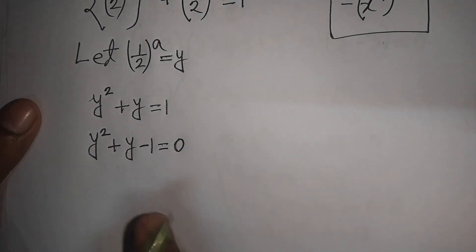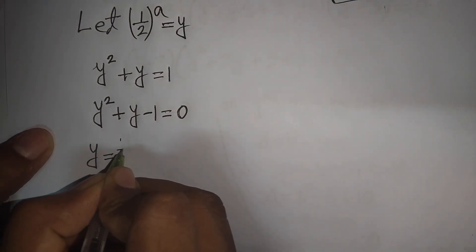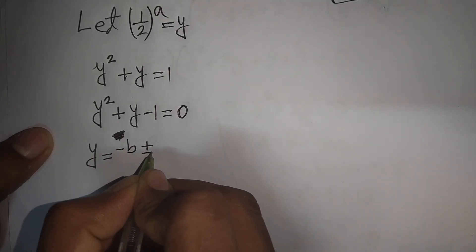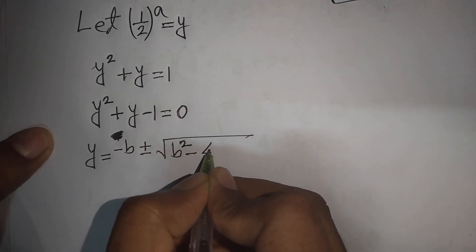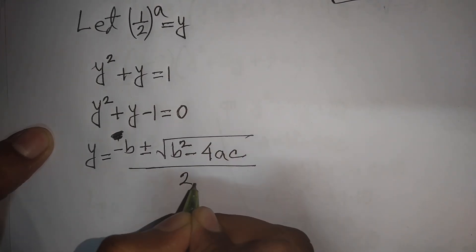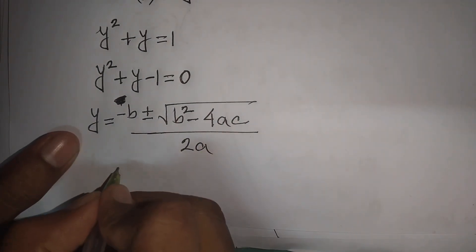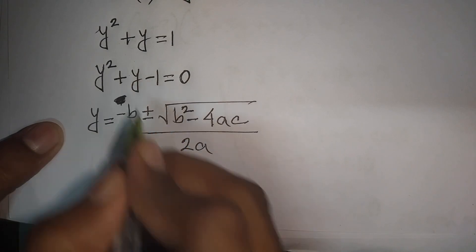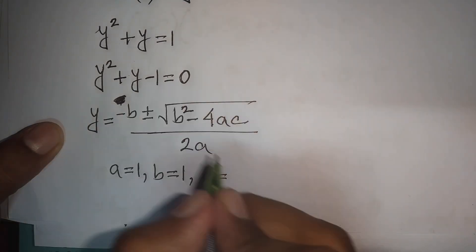We apply the quadratic formula: y equals minus b plus or minus square root of b squared minus 4ac, all divided by 2a. Here a equals 1, b equals 1, and c equals negative 1.